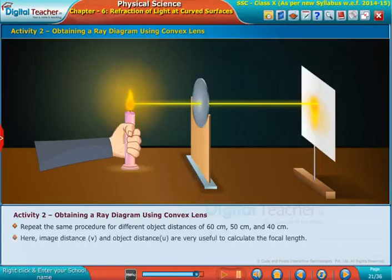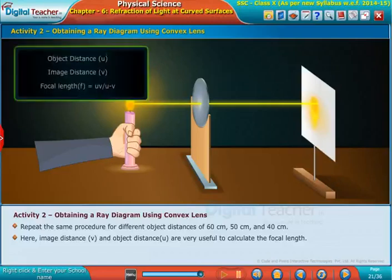Here, image distance v and object distance u are very useful to calculate the focal length. Let us now find the relation among the object distance u, image distance v, and focal length f.